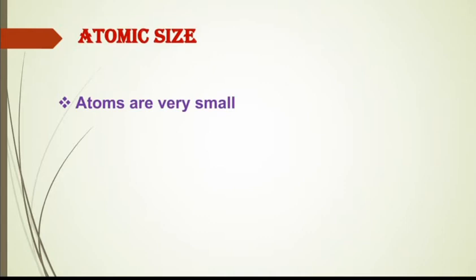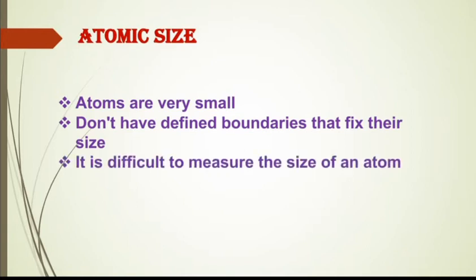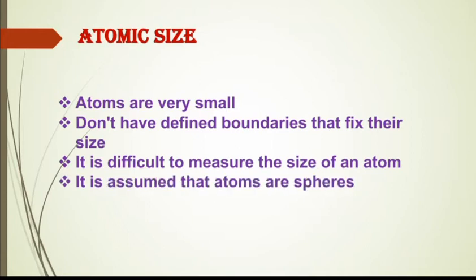Atomic Size - as you know that atoms are very small. Atoms बहुत small size के होते हैं and they do not have defined boundaries that fix their size. इनकी कोई specific boundary नहीं होती जिससे हम इनका size measure करें proper तरीके से। So it is difficult to measure the size of an atom. इसलिए यह assume किया जाता है कि atoms spherical shape में होते हैं।